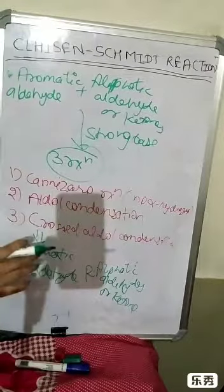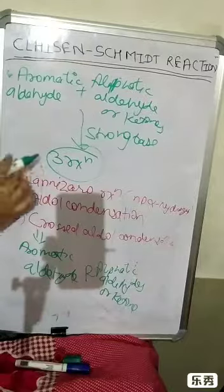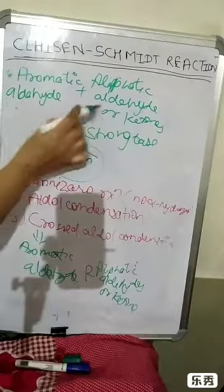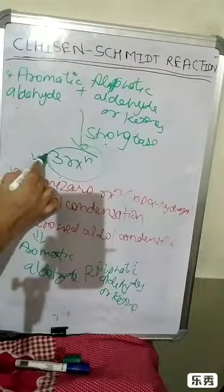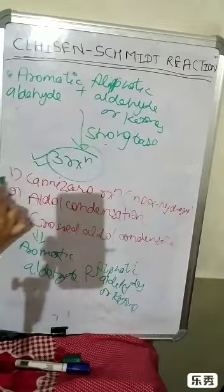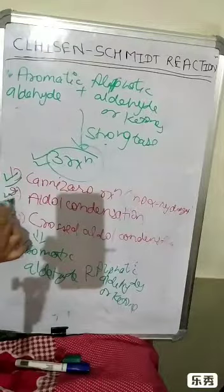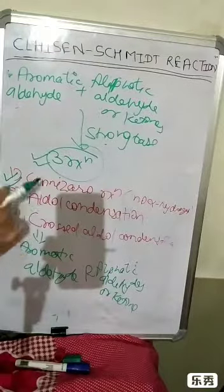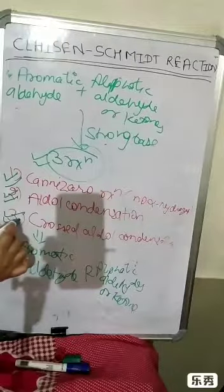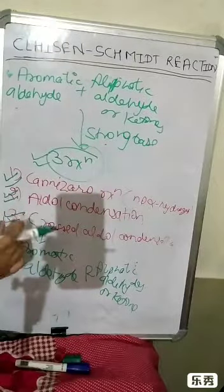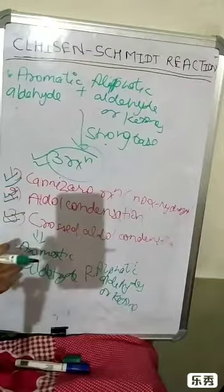These three reactions occur when an aromatic aldehyde reacts with an aliphatic aldehyde in the presence of a strong base. First is the Cannizzaro reaction; second is aldol condensation of the aliphatic aldehydes or ketones; and third is crossed aldol condensation between the aromatic aldehyde and aliphatic aldehyde or ketones.